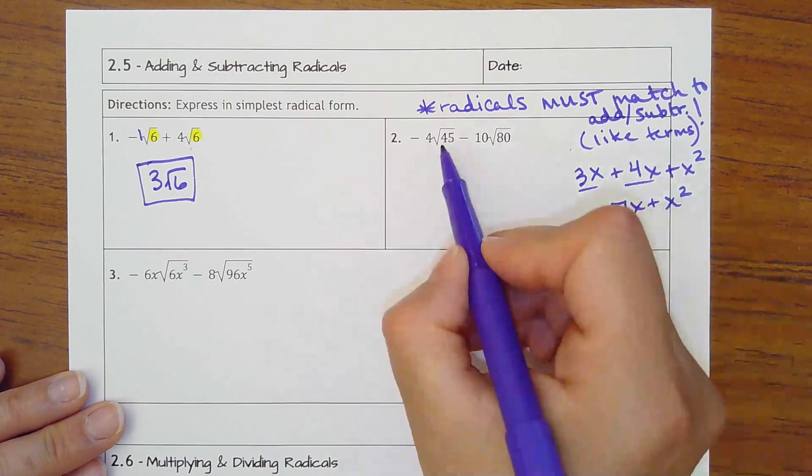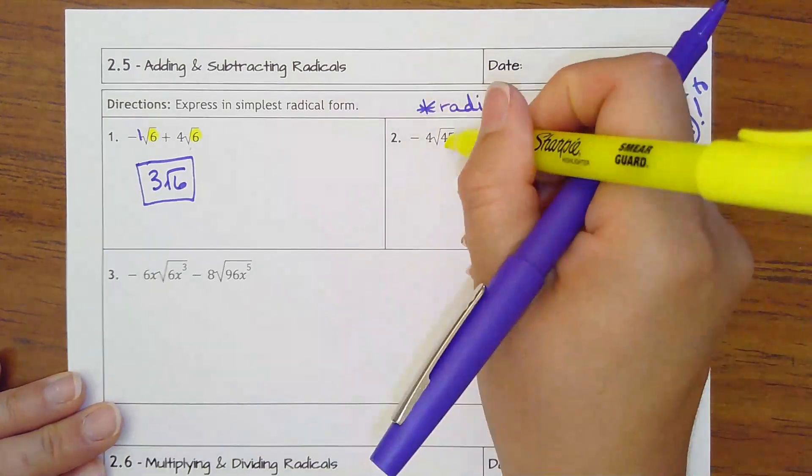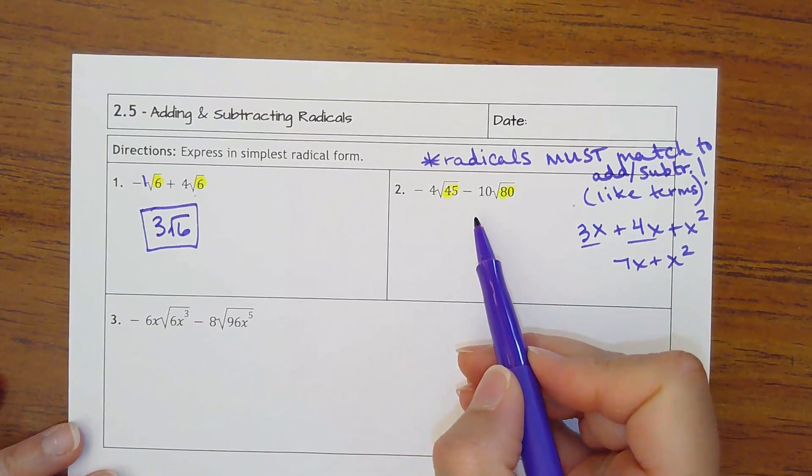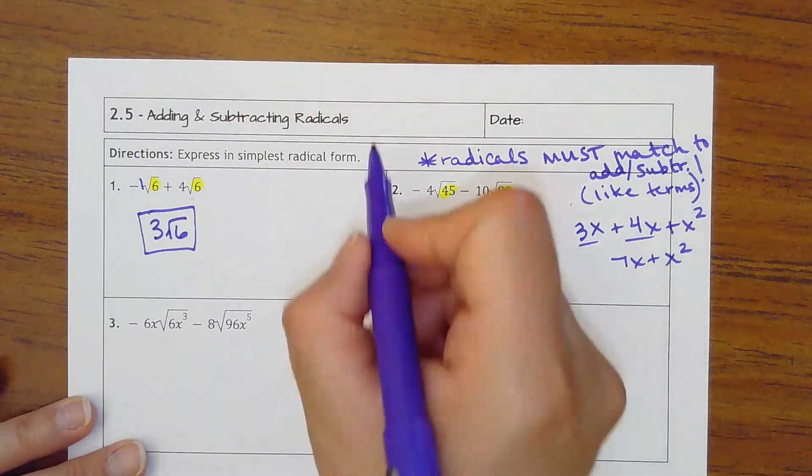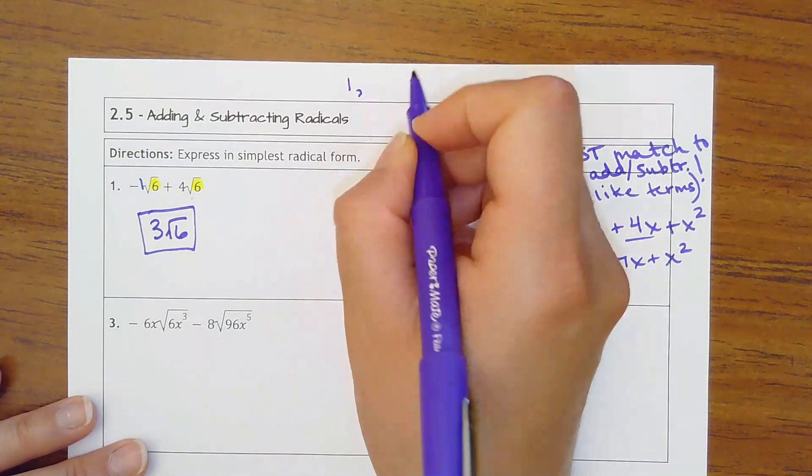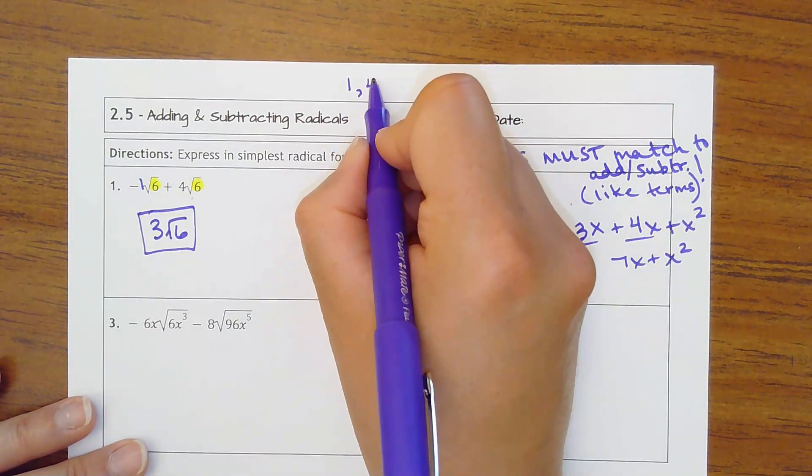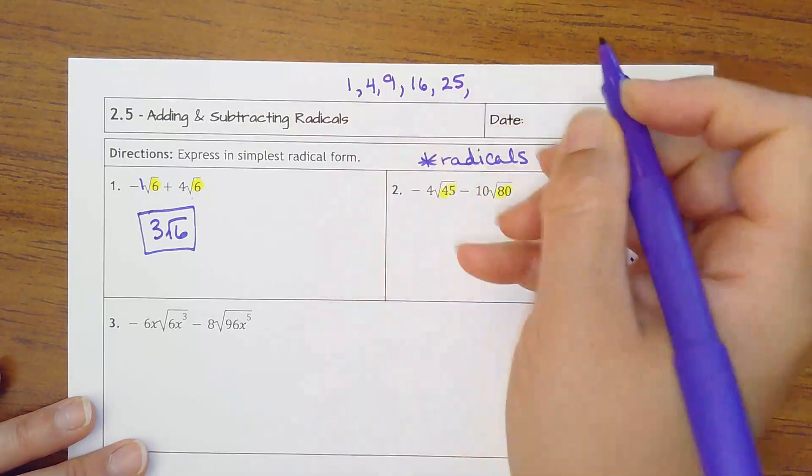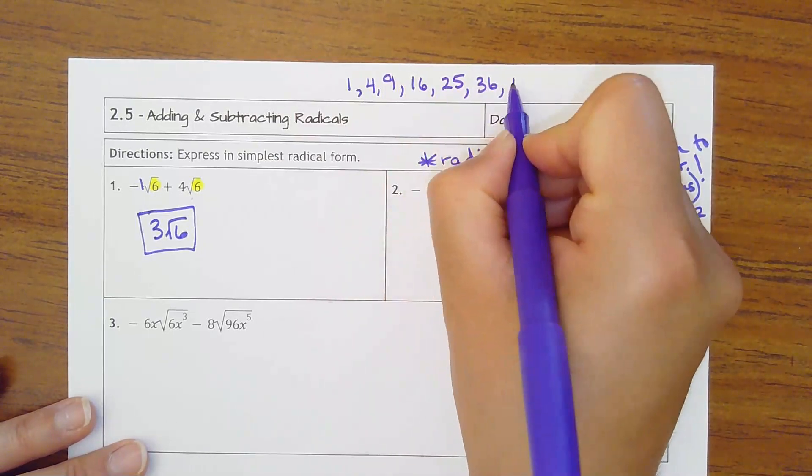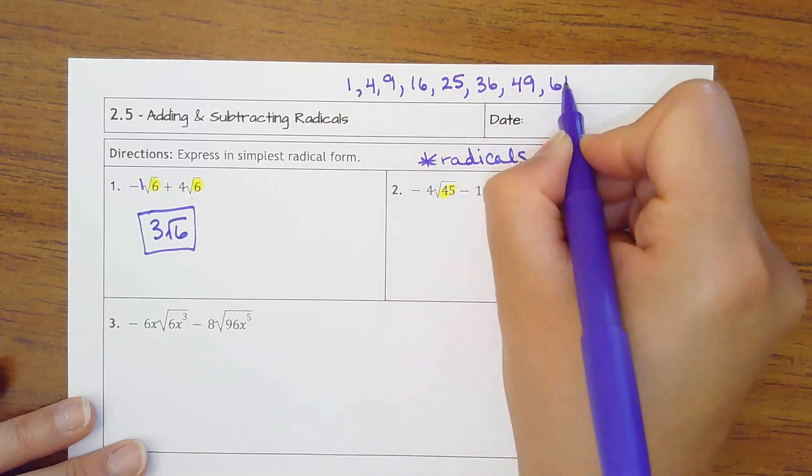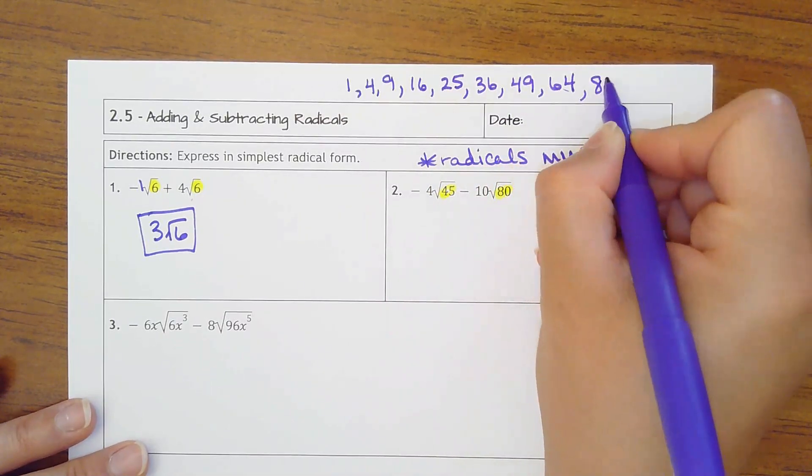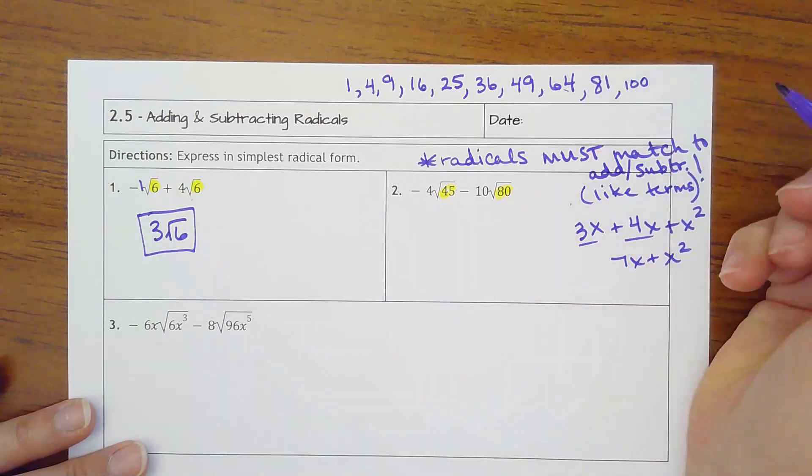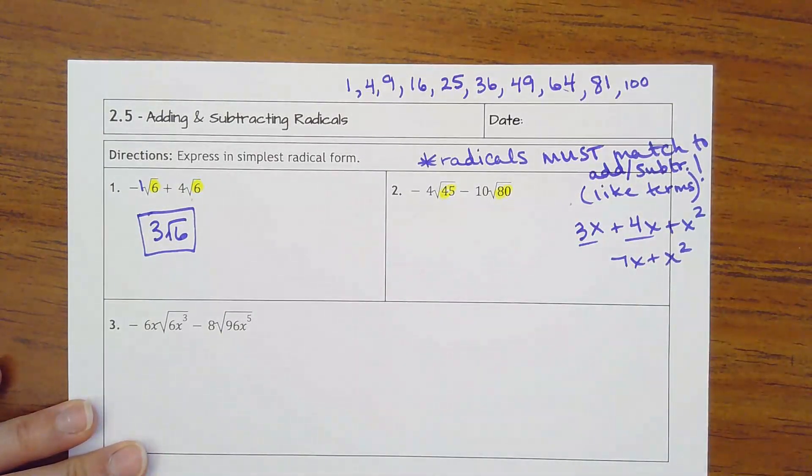Number 2: these don't match right now, square root of 45 and square root of 80. But I should be able to break these apart. If you recall our perfect square numbers: 1 was the smallest, which does us no good. 2 times 2 is 4. 3 times 3 is 9. Then 16, 25, 36, 49, 64, 81, 100. That should be good enough.